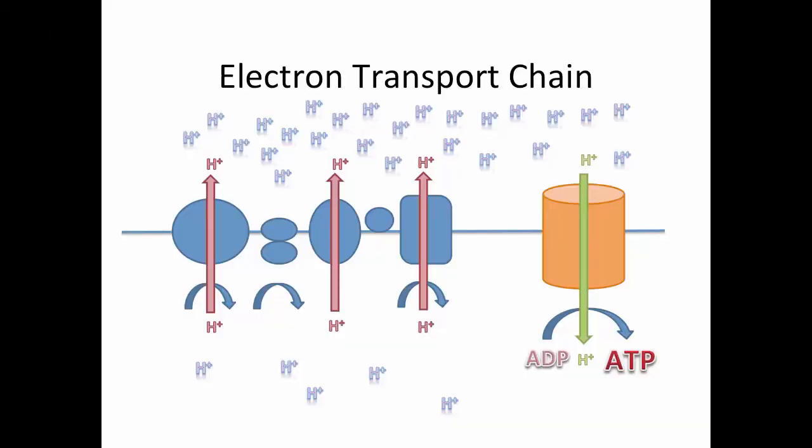In this video, we are going to discuss the electron transport chain. The basic concept behind this series of reactions is that a group of proteins are transferring hydrogen protons across the membrane to create a gradient.